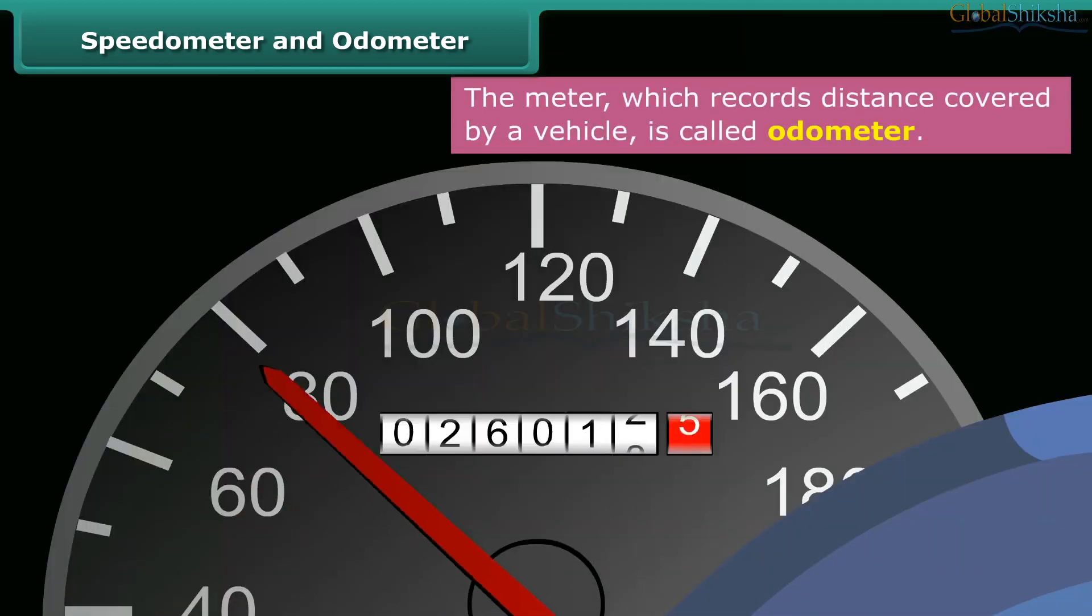There is also a rectangular box within a speedometer that has digits written on it. When the car is in motion, these digits undergo a change, rather increase. This rectangular box is known as the odometer. Its readings show the distance covered by the car.